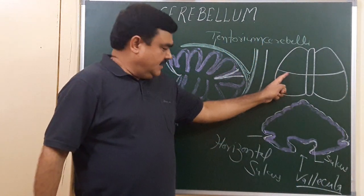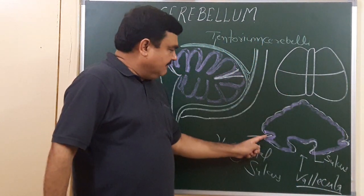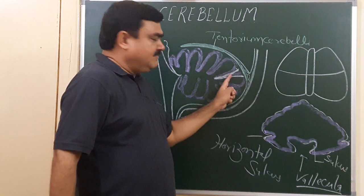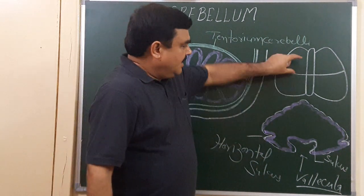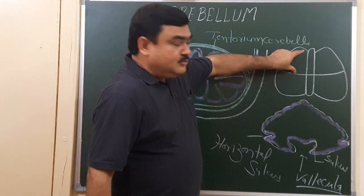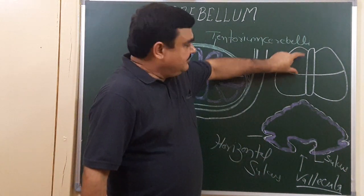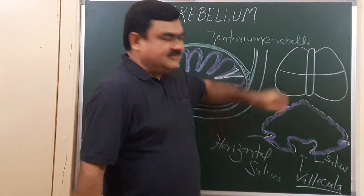This is the horizontal fissure. This horizontal fissure divides the surface — above this is the superior surface, and below this is the inferior surface.